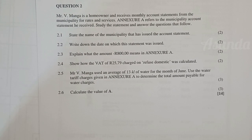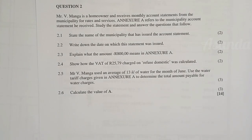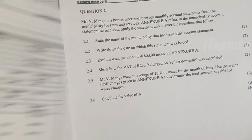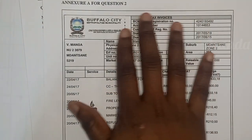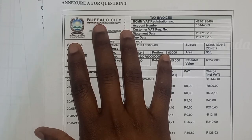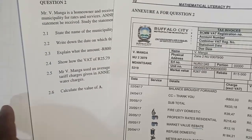Now we answer the questions. Question 2.1: State the name of the municipality that issued the account statement. Looking at the top of the statement, it says Buffalo City Metropolitan Municipality. Make sure you write it in full.